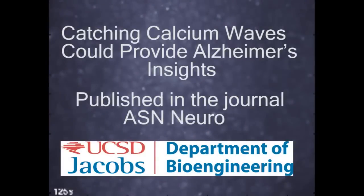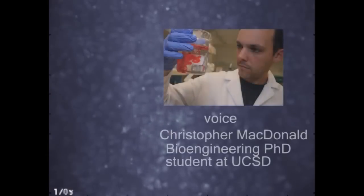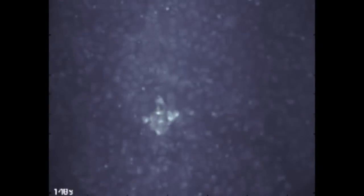When you apply amyloid beta to a culture of these astrocytes, you start to see an uptick in the calcium activity of these astrocytes. And so you'll see these cells start to all of a sudden oscillate. So the calcium increases and comes back down.